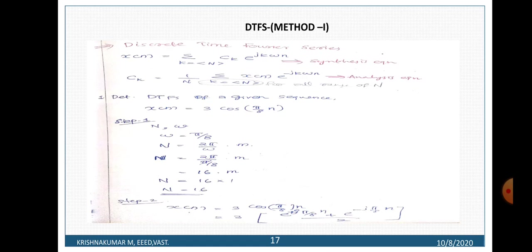Find the period N. Capital N is the smallest positive integer such that N equals 2π divided by omega times M, where M is the smallest positive integer. So N equals 2π divided by π/8 times M, which gives N equals 16M.